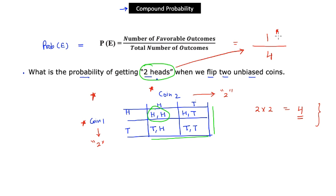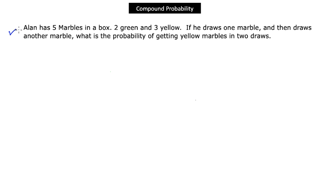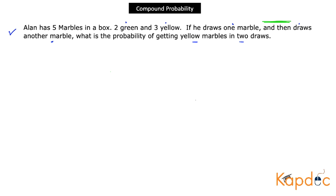Now let's look at a different example involving dependent events. Alan has five marbles — two green and three yellow. If he draws one marble and then draws another, what is the probability of getting yellow marbles in two draws? Note the keyword: he draws one and then draws another, meaning two events happen sequentially.